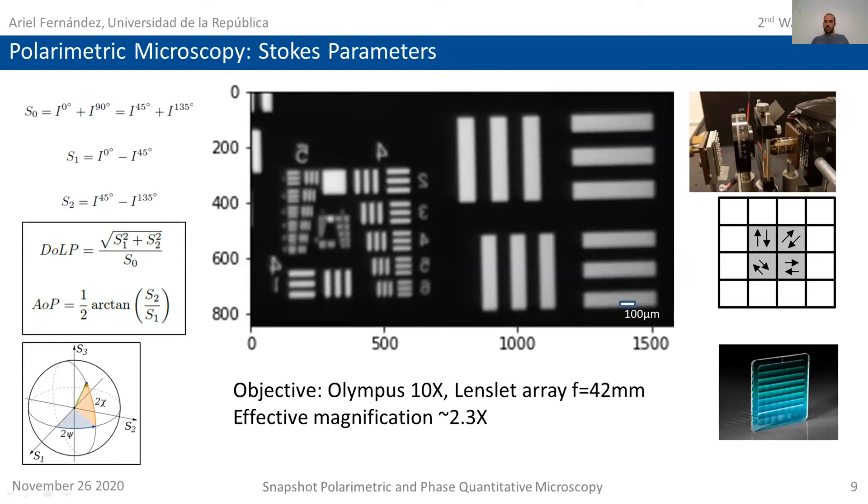So somehow we are sacrificing some lateral resolution of our system for real time. This is deeply rooted in the physics of our system because the amount of information is somehow fixed, so we are not using the whole chip, the whole sensor, but we're using some parts, and what we're going to gain is real-time operation capability.